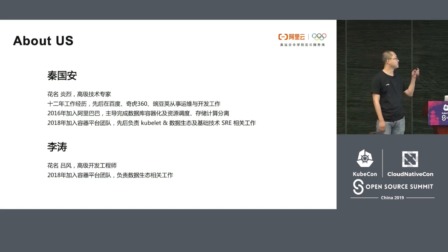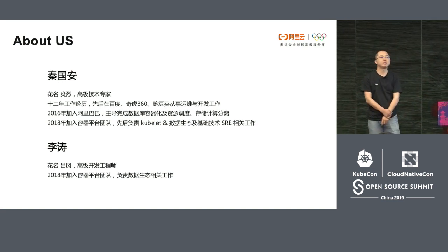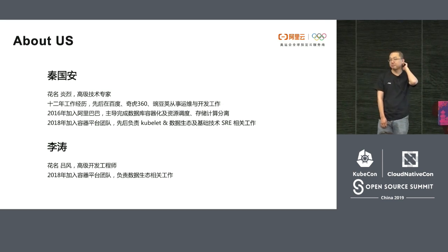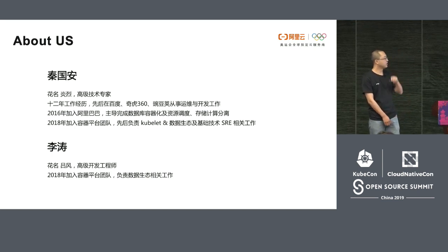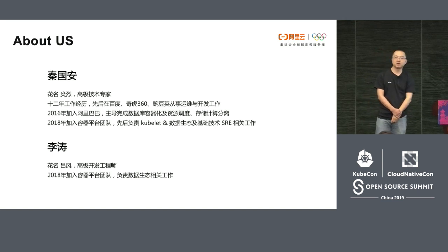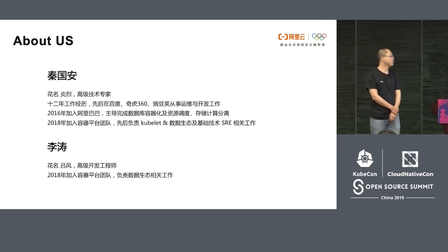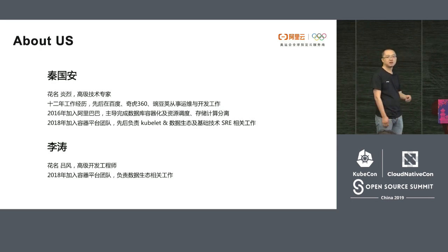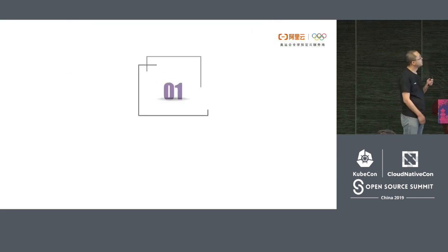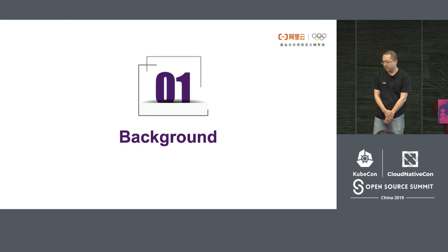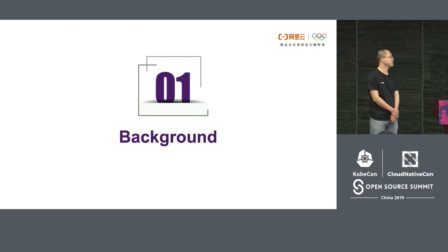A brief self-introduction. My name is Qin Guoan. I joined Alibaba in 2016 and I work in containers and about containers on the host, and now I work for Kubernetes and SRE. My colleague joined our team in 2018 and is mainly responsible for the data deployment ecosystem.